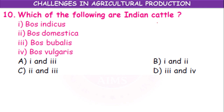Which of the following are Indian cattle? Bos indicus, Bos domestica, Bos bubalis, Bos vulgaris. Bos indicus is Indian cattle; Bos domestica is not; Bos bubalis is Indian cattle; Bos vulgaris is not. So 1 and 3 are correct — option A.